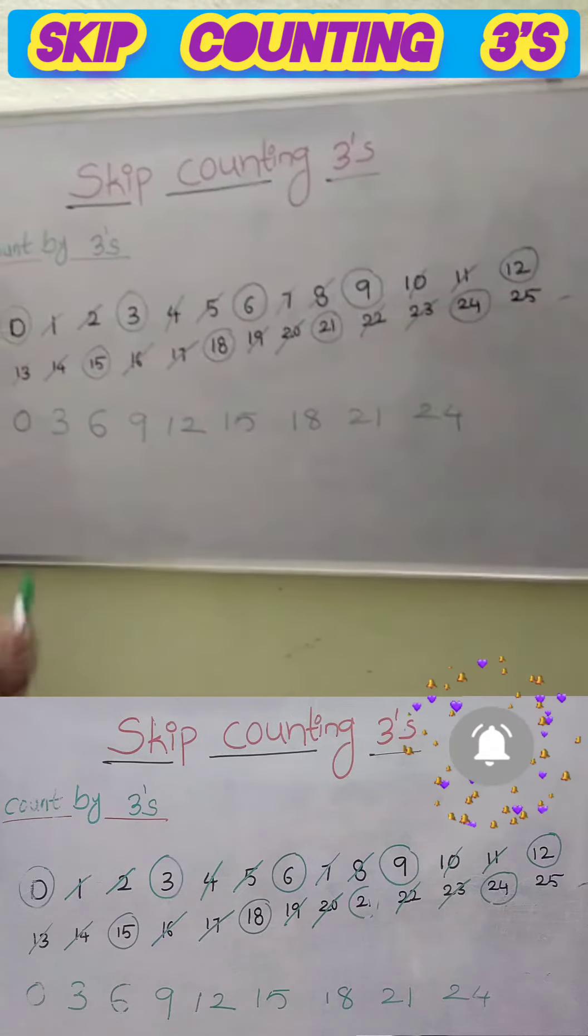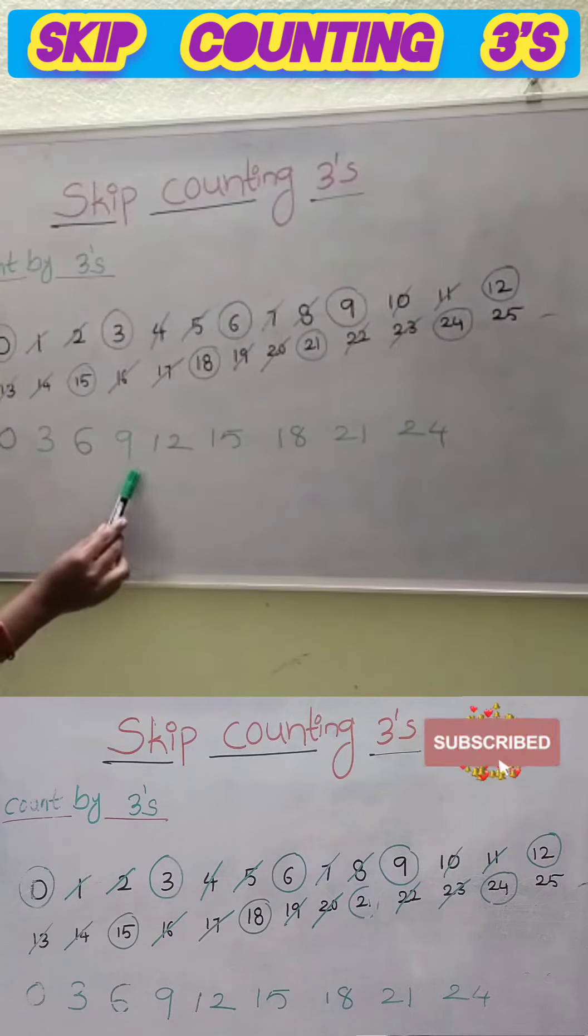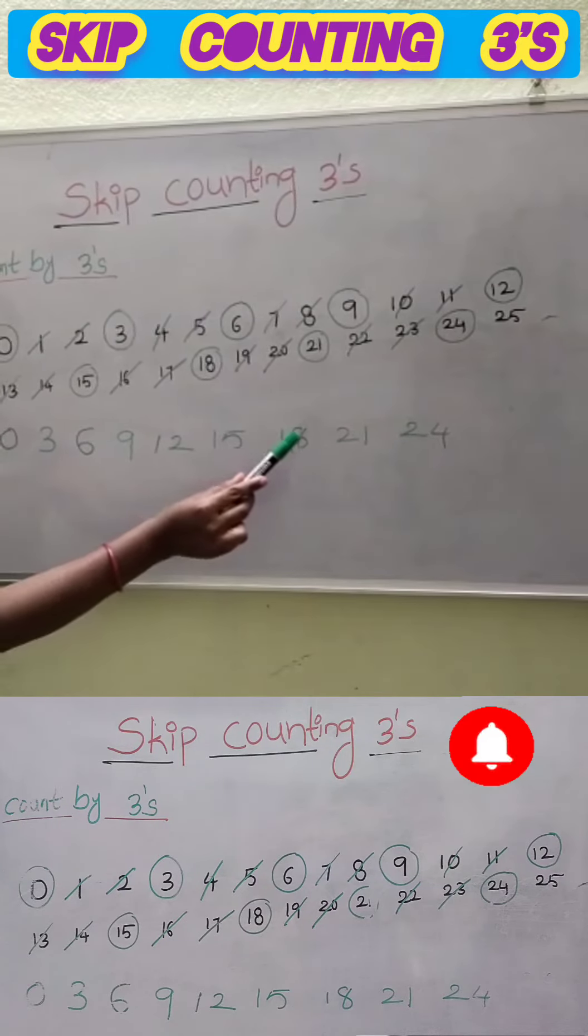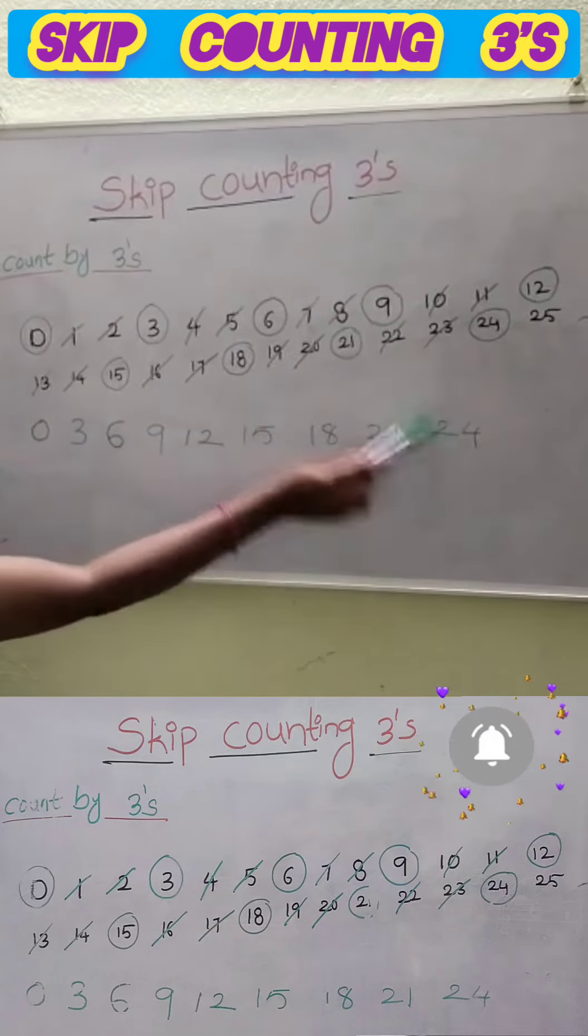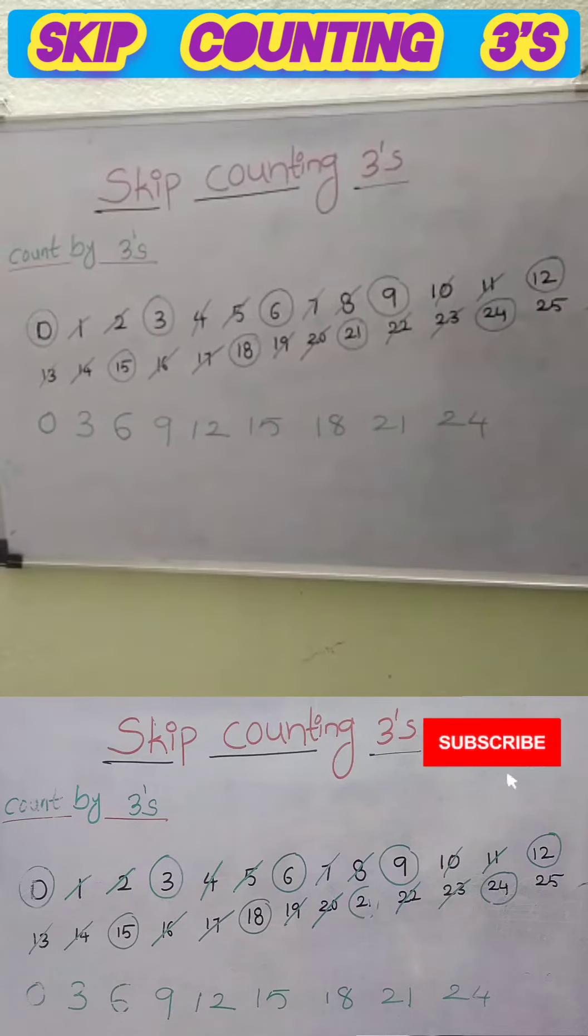0, 3, 6, 9, 12, 15, 18, 21, 24. You get it.